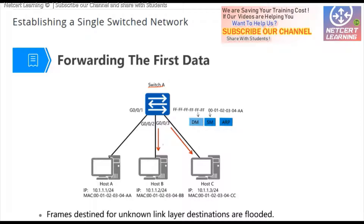When the switch floods the frame out, both host B and host C receive it. The destination of the layer 2 frame is all ones, so each host accepts it and forwards the packet up to the ARP protocol. The ARP request says it wants to resolve the MAC address for IP address 10.1.1.3. Host B sees that the address needed to resolve is not its own IP address, so host B drops the ARP request. But host C sees that the IP address needed to resolve is its own IP address.